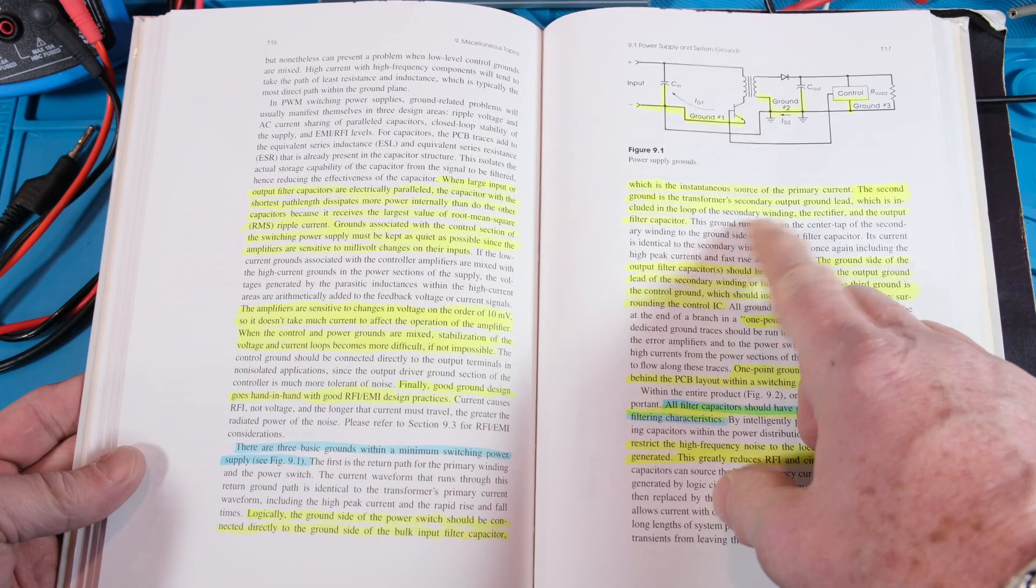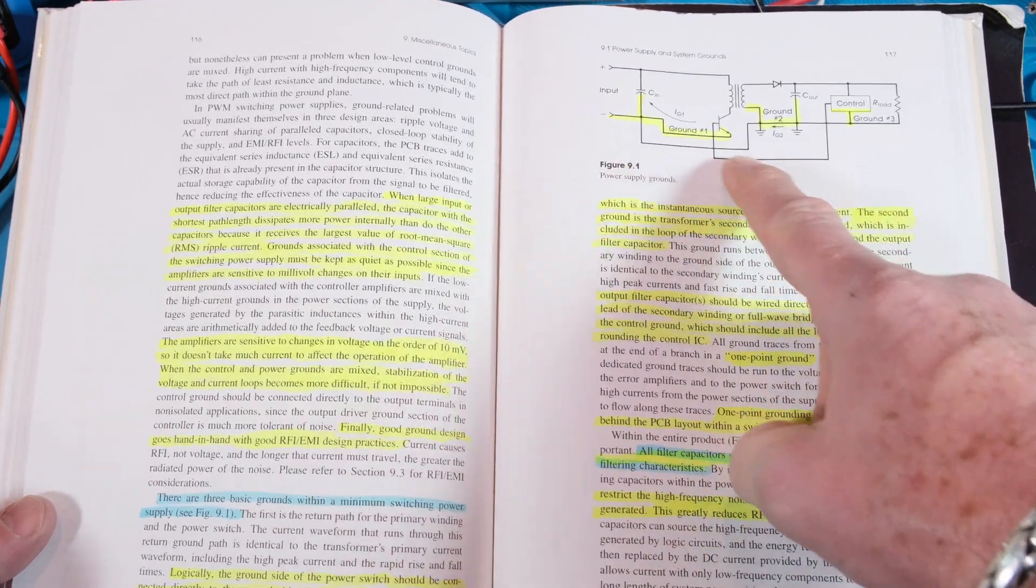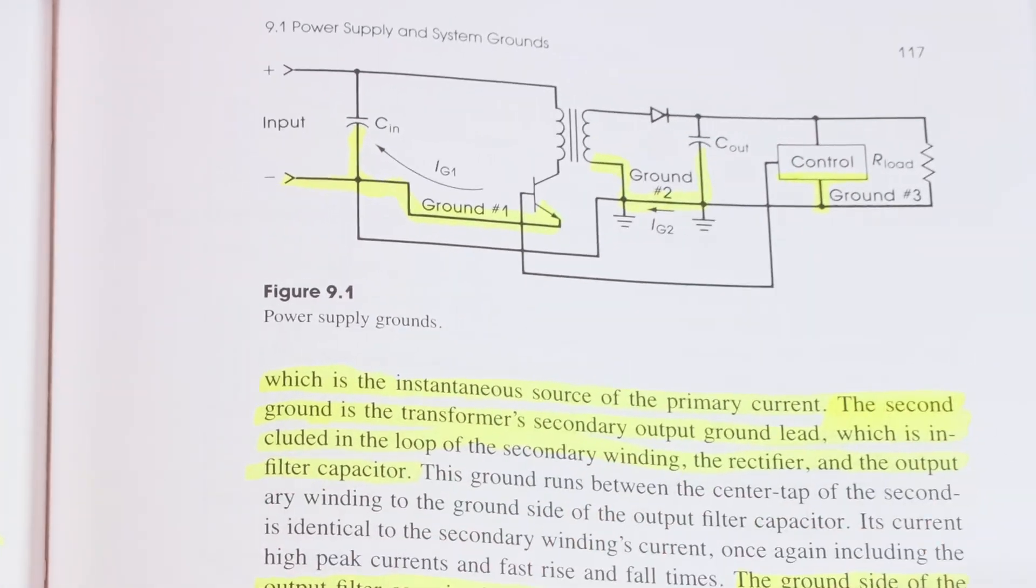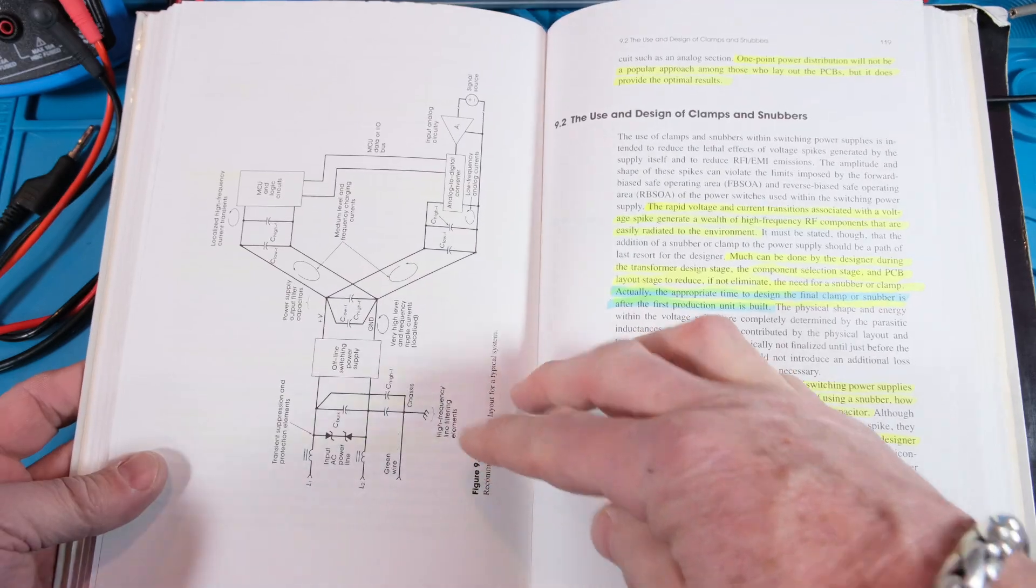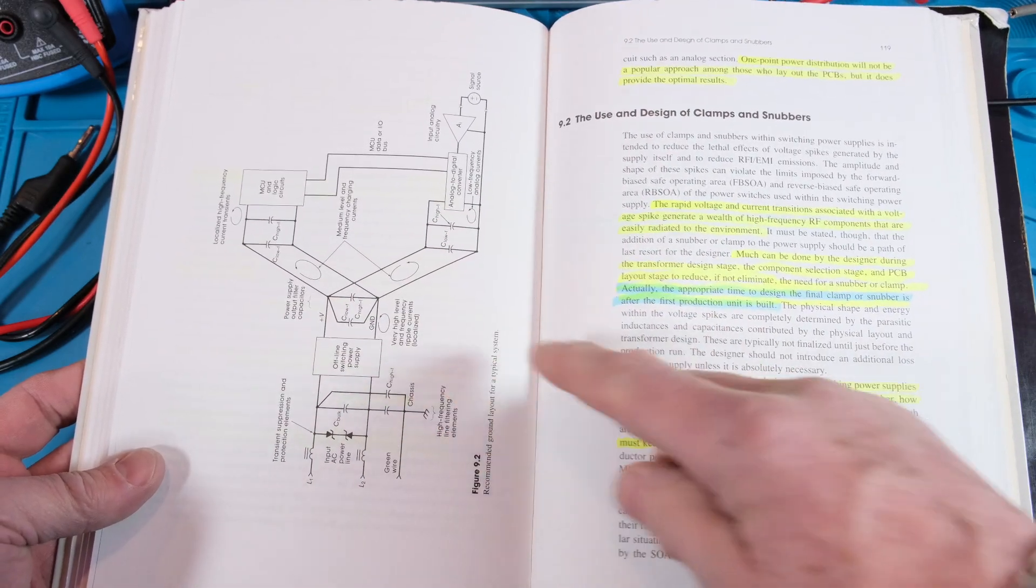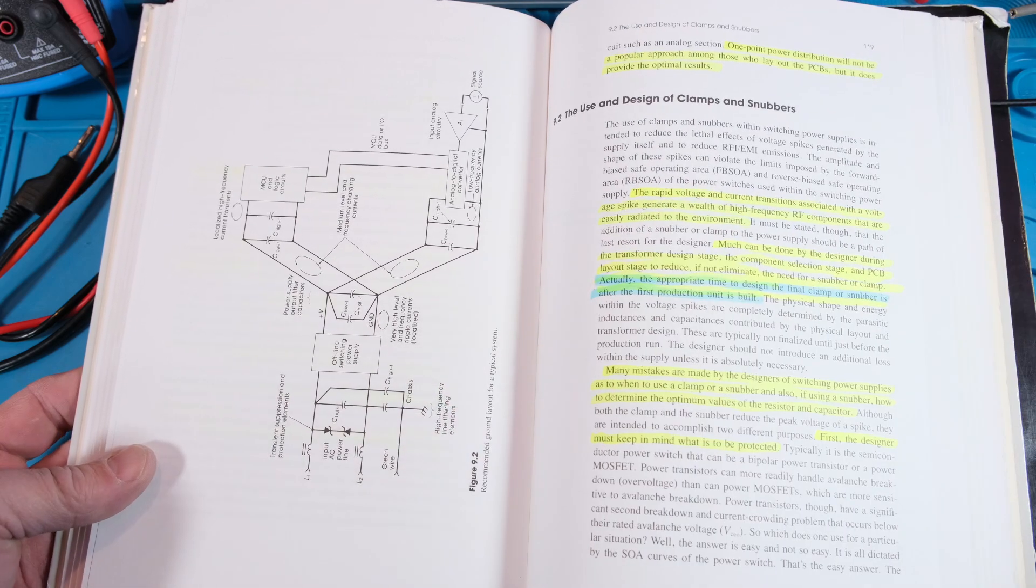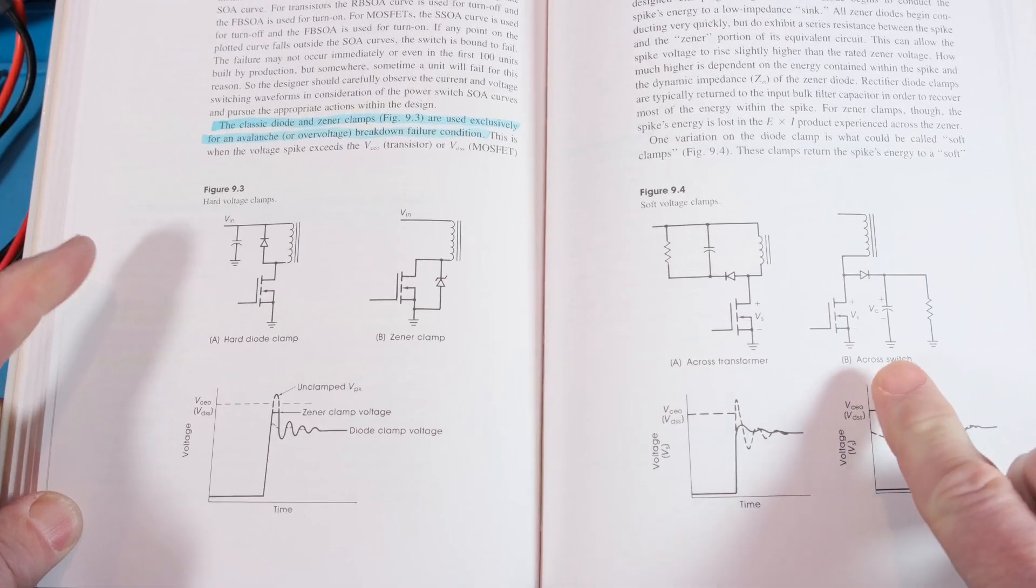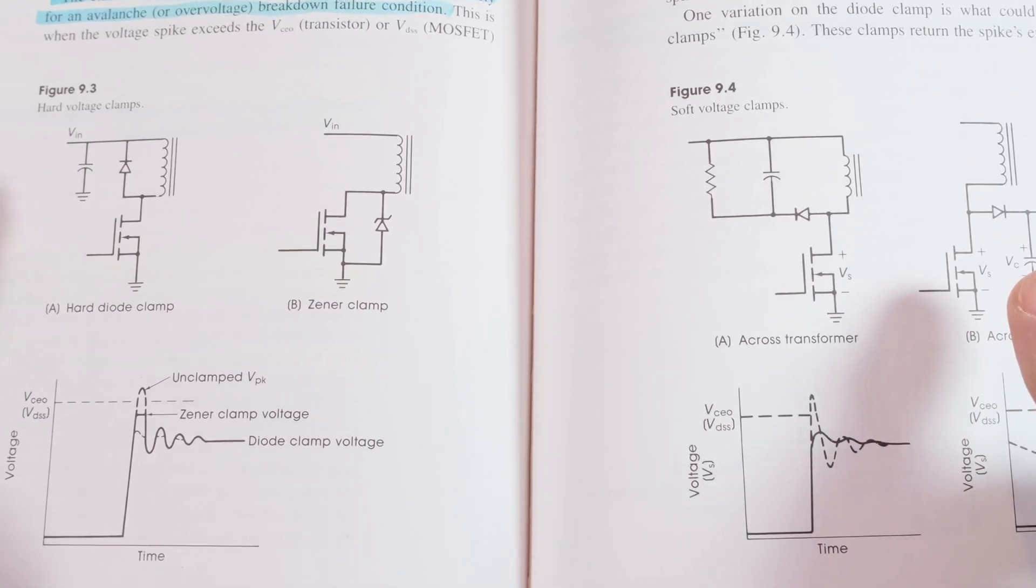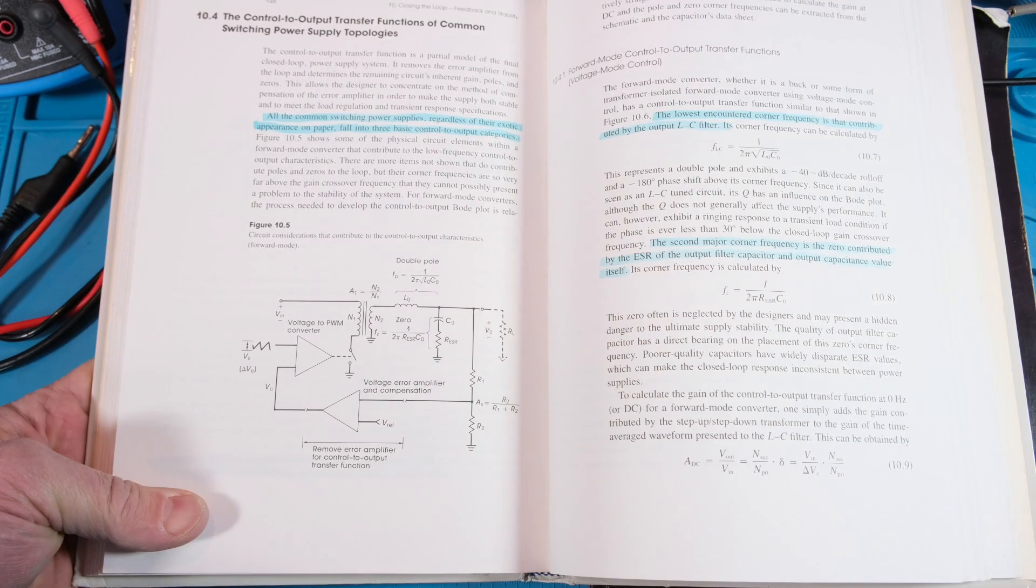You know how I like to point out grounding systems. Right here, he's talking about power supply grounds. You can see all the highlighting I've done. More diagrams on grounding and then he goes into clamps and snubbers. Here's a basic diagram of some hard voltage clamps and soft voltage clamps.